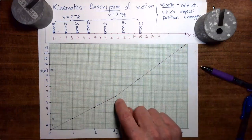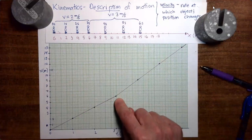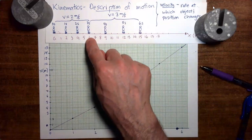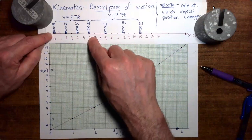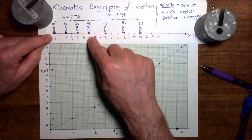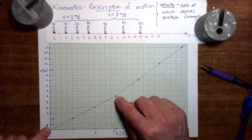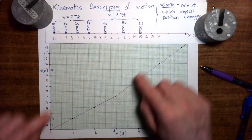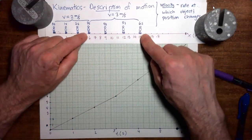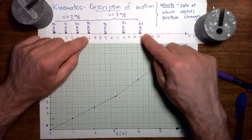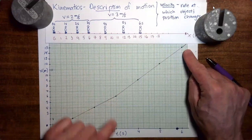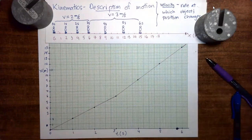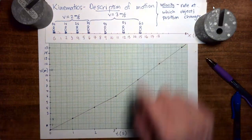Do you notice that the shift in the slope of the plot occurs at the exact same moment that the person's velocity changes? From time equals 0 seconds to time equals 3 seconds, where the person has the slower velocity, position as a function of time has a more gradual slope. And then from 3 seconds to 6 seconds, where the person has a greater velocity, position as a function of time has a steeper slope. So it seems there is some connection between the slope of the position versus time plot and the velocity of the person.